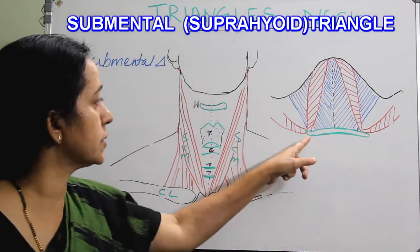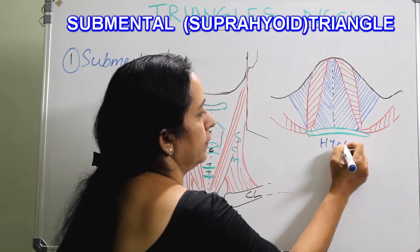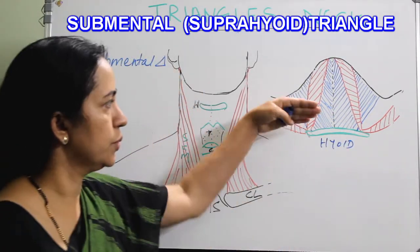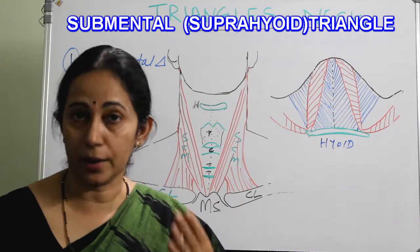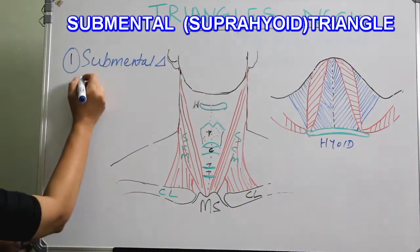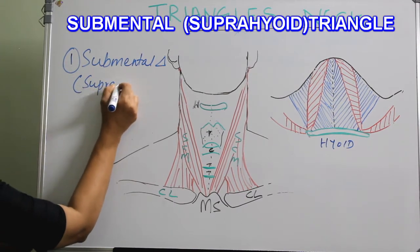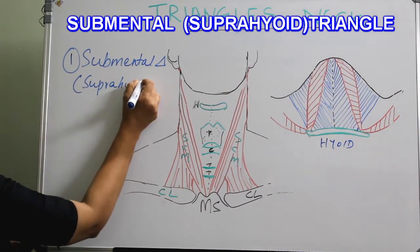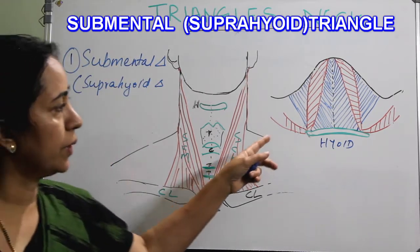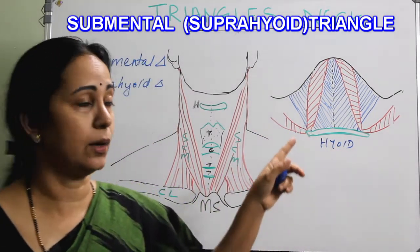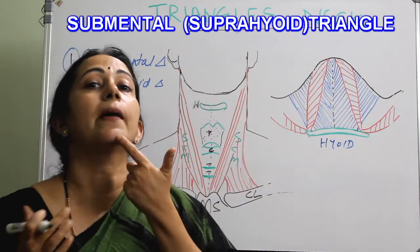We can also call it the suprahyoid triangle because this is the hyoid bone — suprahyoid means above the hyoid bone. So the submental triangle is otherwise called the suprahyoid triangle. The apex of this triangle is formed by the chin.